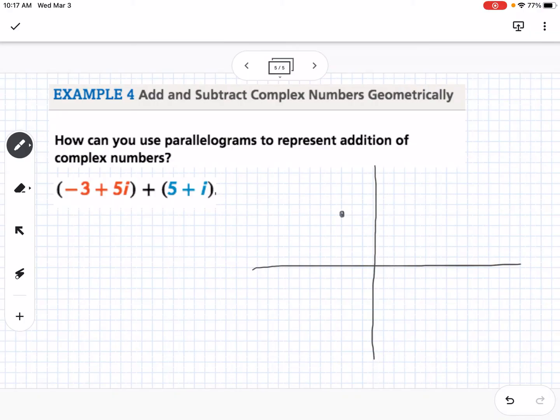negative 3 plus 1, 2, 3, 4, 5. So that would be that point. And then 5 plus i, 1, 2, 3, 4, 5 would be right there.